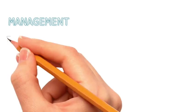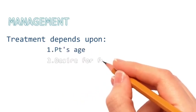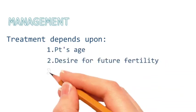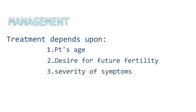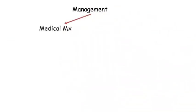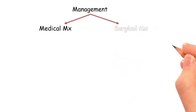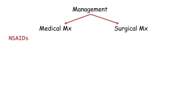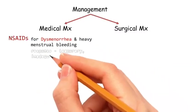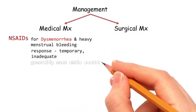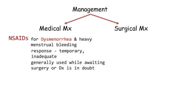In the management of adenomyosis, the treatment depends upon the patient's age, desire for future fertility, and the severity of the symptoms. Management can be either medical or surgical. In medical management, NSAIDs are used for dysmenorrhea and heavy menstrual bleeding. The response is usually temporary and inadequate, and is generally used while awaiting surgery or when the diagnosis is not yet confirmed.